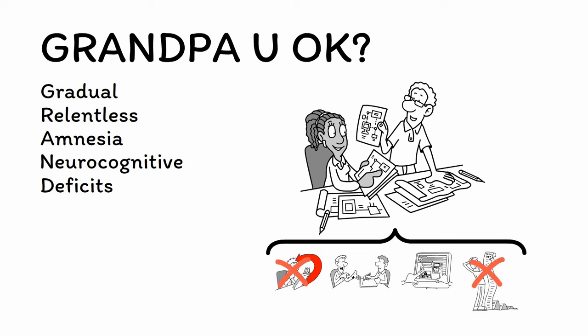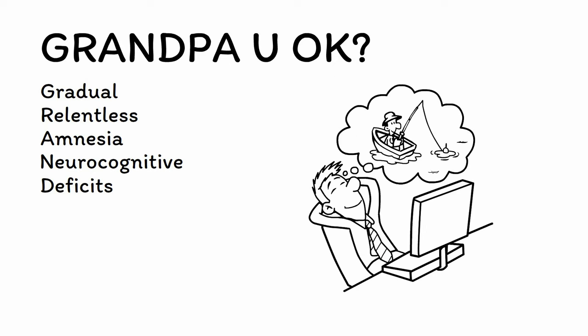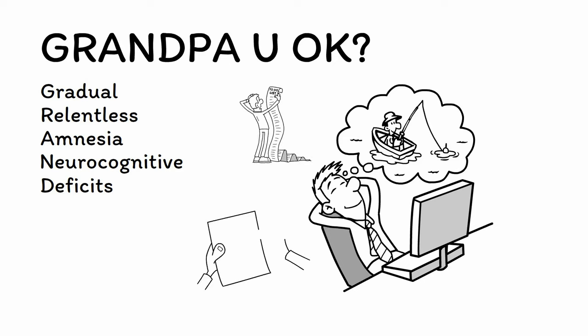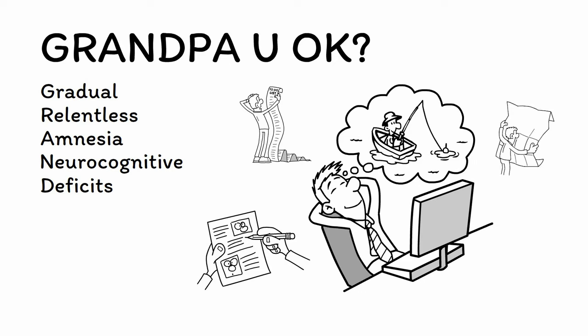If there is impairment in any of these domains, then the ability to carry out the idea will be lost. For example, someone who's going fishing needs the ability to make a list of everything they'll need to bring, which tests executive functioning; fill out the permit, which tests language; use a map to find the lake, which tests visuospatial skills; have the fine motor skills to put bait on the line, which tests apraxia; and interpret what a sudden pull on the line means, which tests agnosia. As Alzheimer's disease progresses, the ability to engage in higher-level activities like this is lost, with the patient engaging in progressively simpler tasks and finally ceasing most forms of goal-directed behavior in late stages.